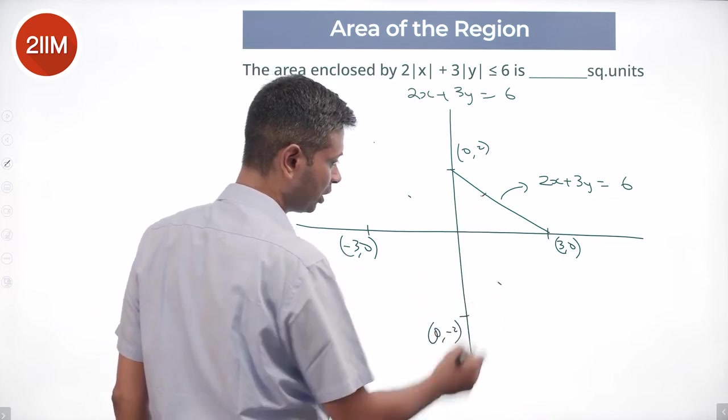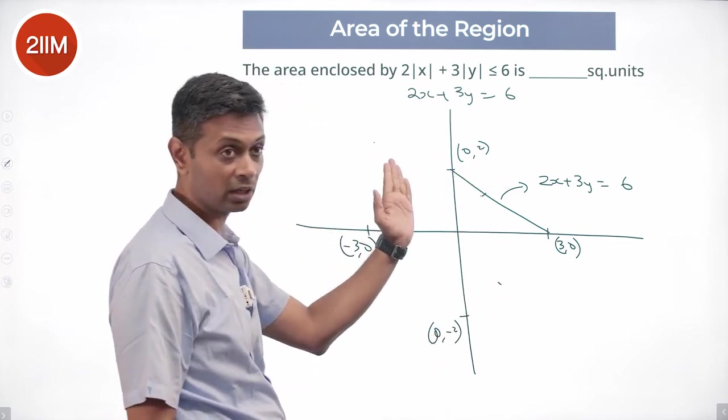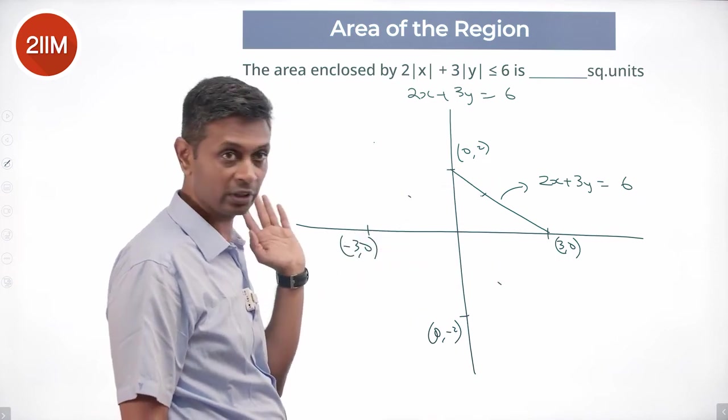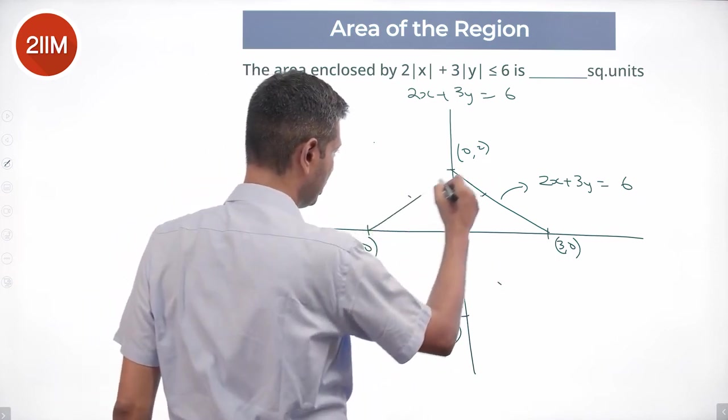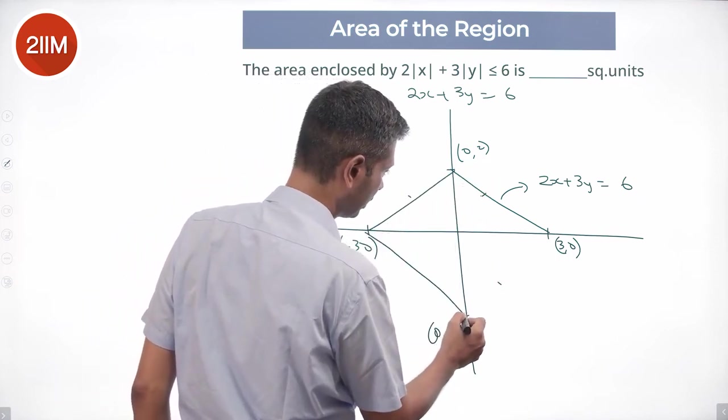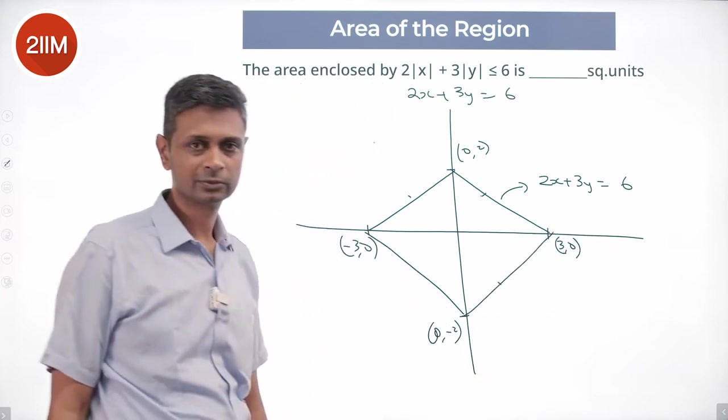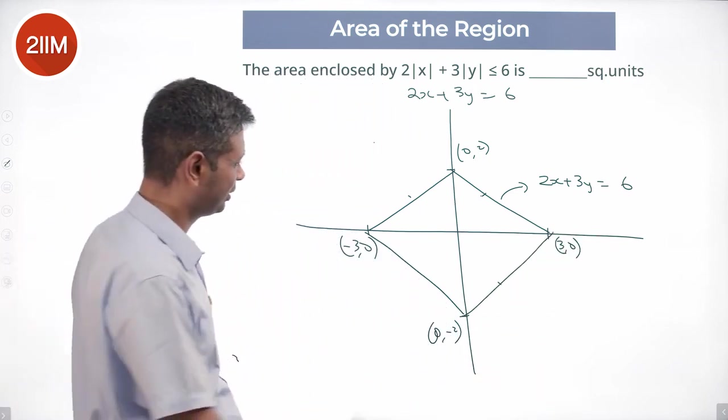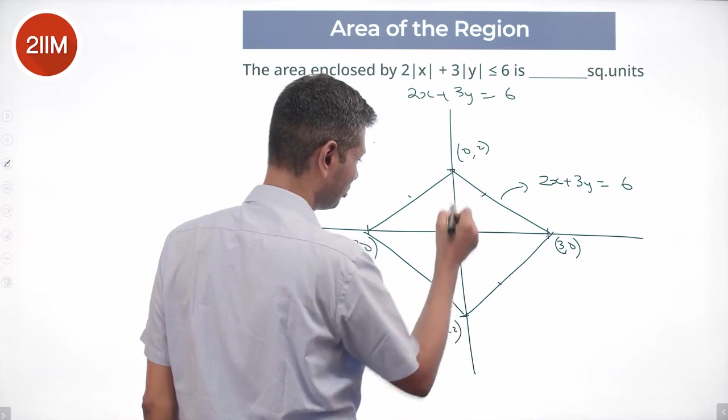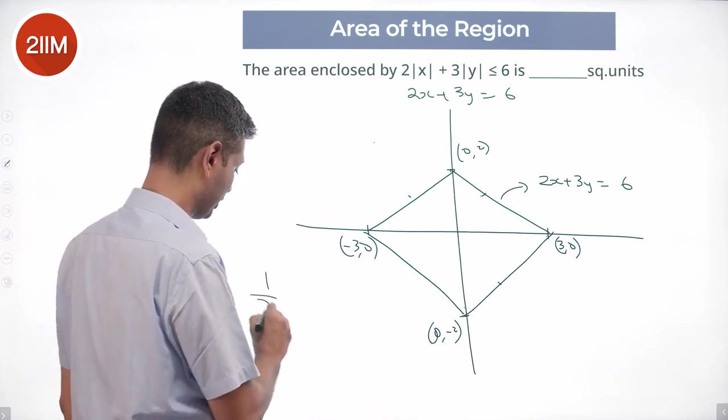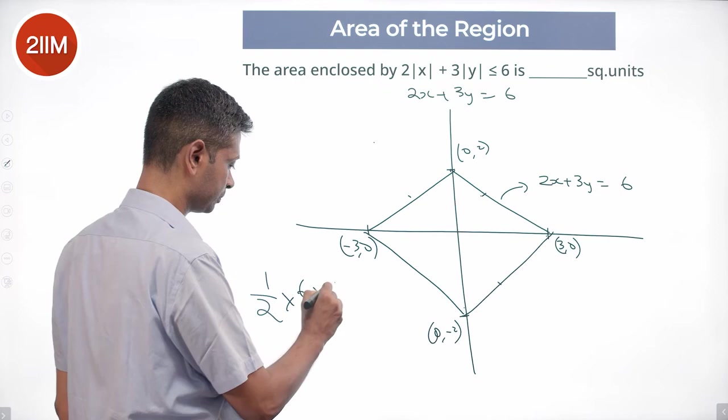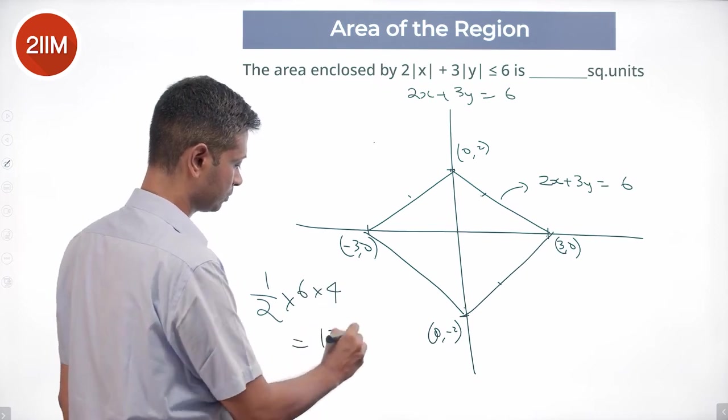If a point here works, a point here will work. If a point here works, a point here will work. Instead of x put minus x, that will work. Instead of y put minus y, that will work. We're dealing with a shape like this, the nice little rhombus, this being 6, this being 4. Area is half into product of diagonals.